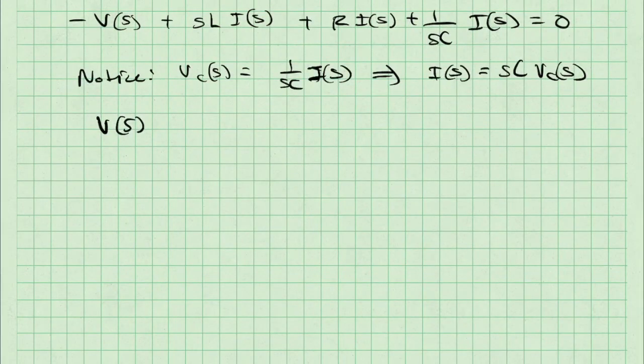I've got V of S, S is equal to, in parentheses, SL plus R plus 1 over SC, close parentheses, times I of S. If I multiply all of this by S, I can clear the S out of the denominator of 1 over SC.